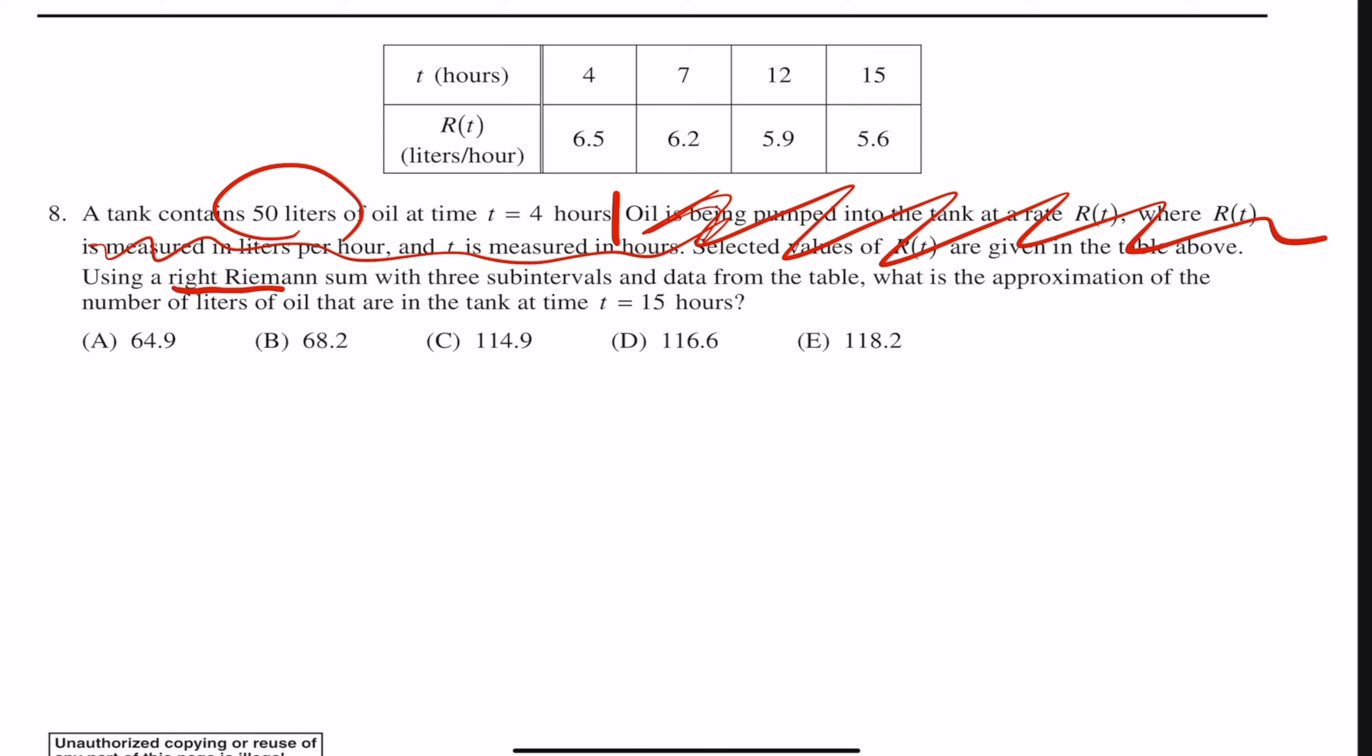Using the right Riemann sum, so we're going to use the right Riemann sum with three sub-intervals, what is the approximation?